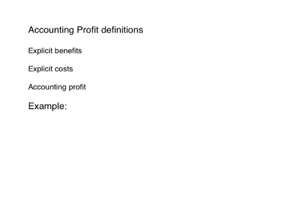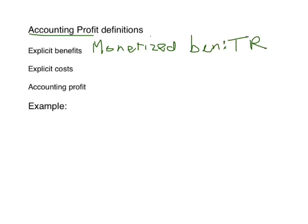Let's first talk about accounting profit. To do that, we need to add some terms. Explicit benefits — the book doesn't focus on explicit benefits, but it's important the way I think about things. Explicit benefits are benefits that are in money, so I'll just use the term monetized benefits. When we talk about the firm's total revenue, that's really what we mean by explicit benefits — the price of a firm's product times the quantity sold.